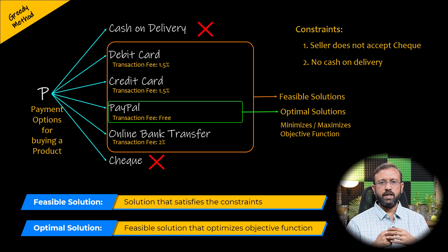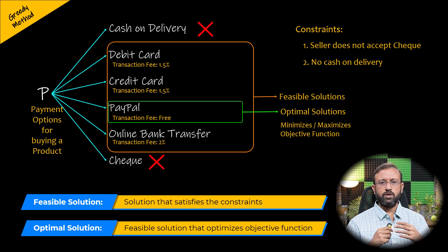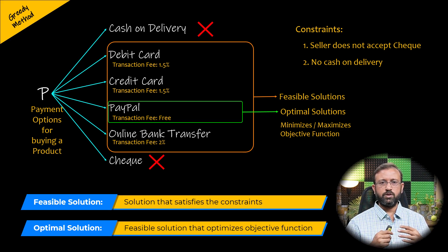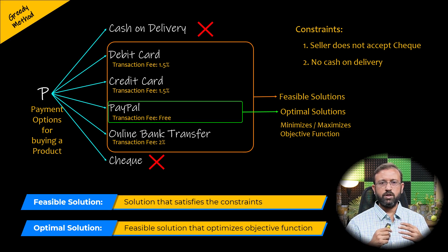There can be many solutions for a problem. Among those solutions, the ones that satisfy the constraints are the feasible solutions. And among the feasible solutions, the solution that minimizes or maximizes the objective function is known as an optimal solution.